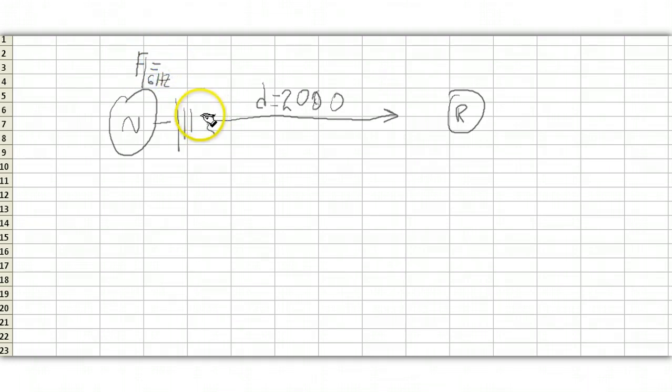All right, so I'm going to give you a formula and I will leave it to others to derive it for you. So the free space loss in dB is equal to some constant 96.6 plus 20 times the log of the distance in miles plus 20 times the log of the frequency in gigahertz.